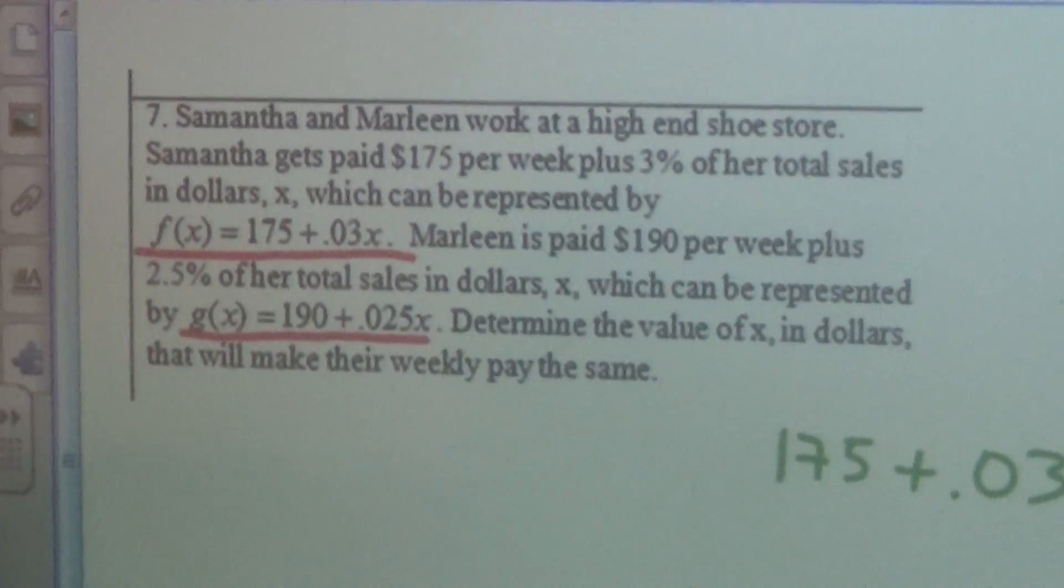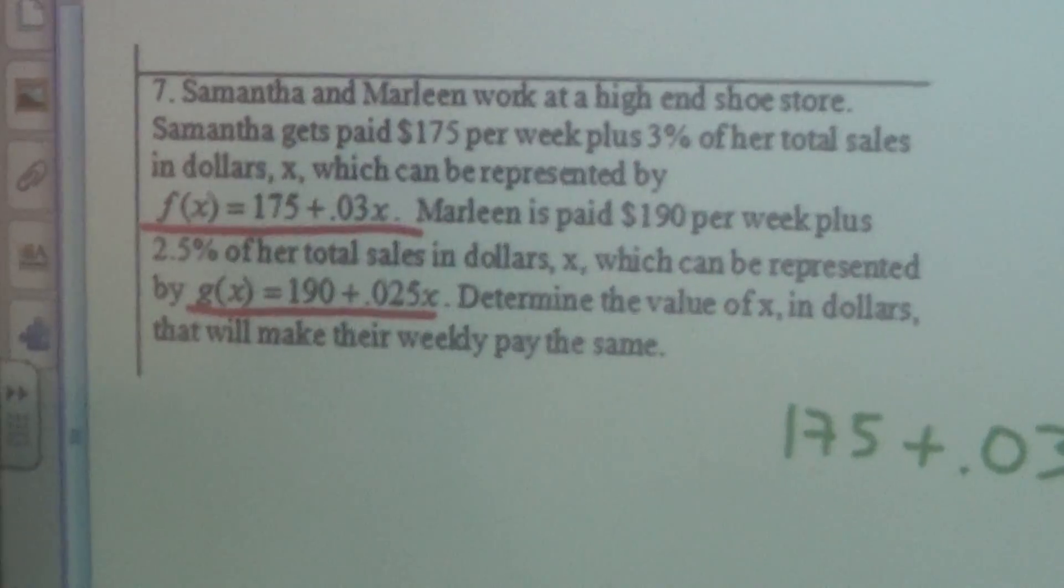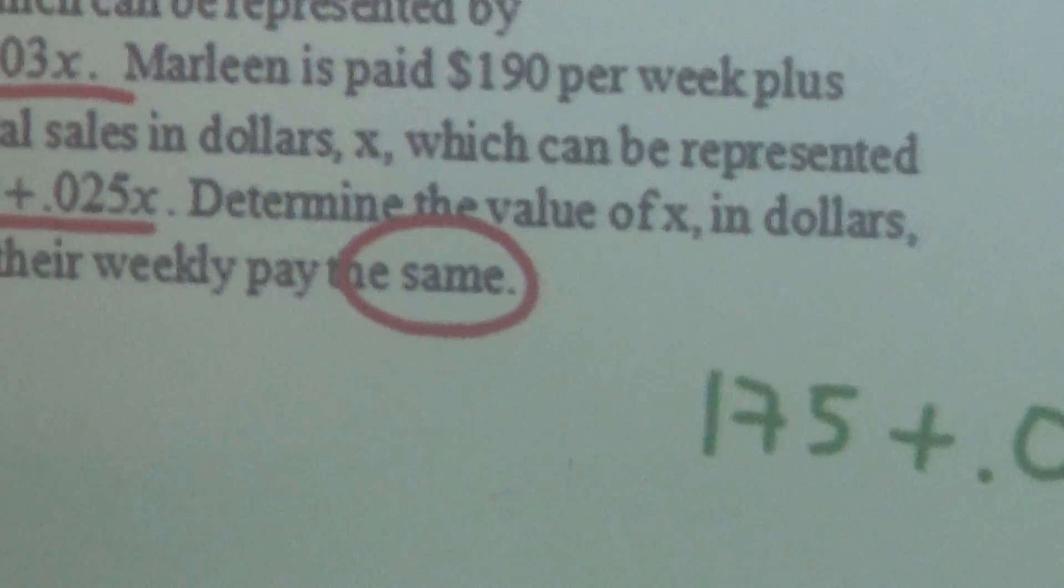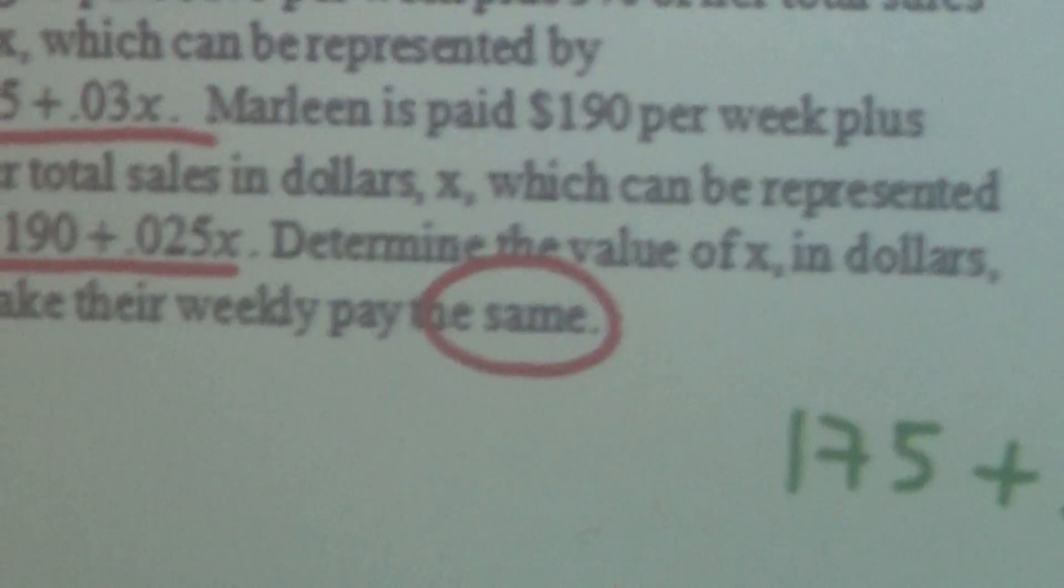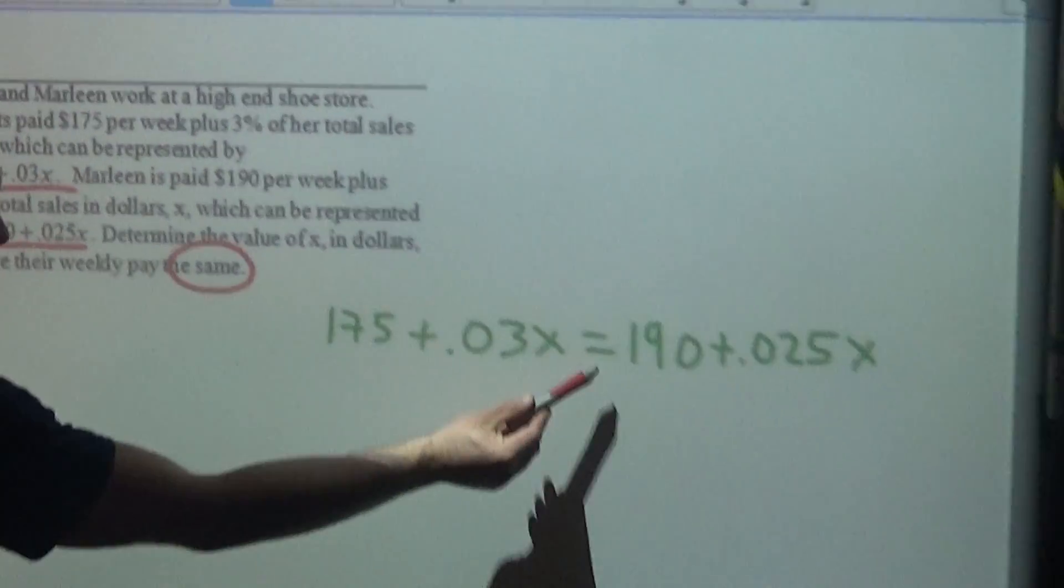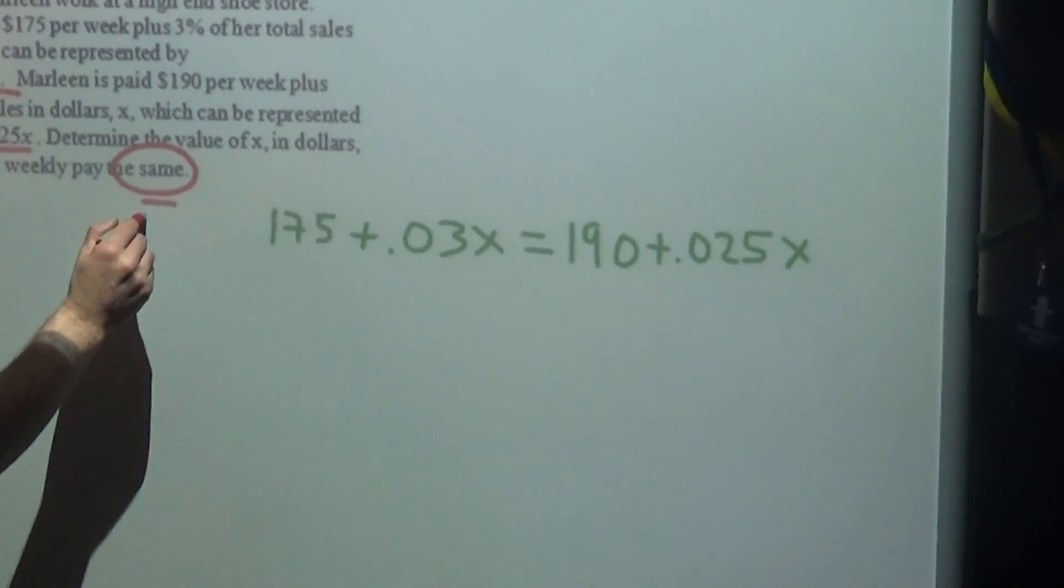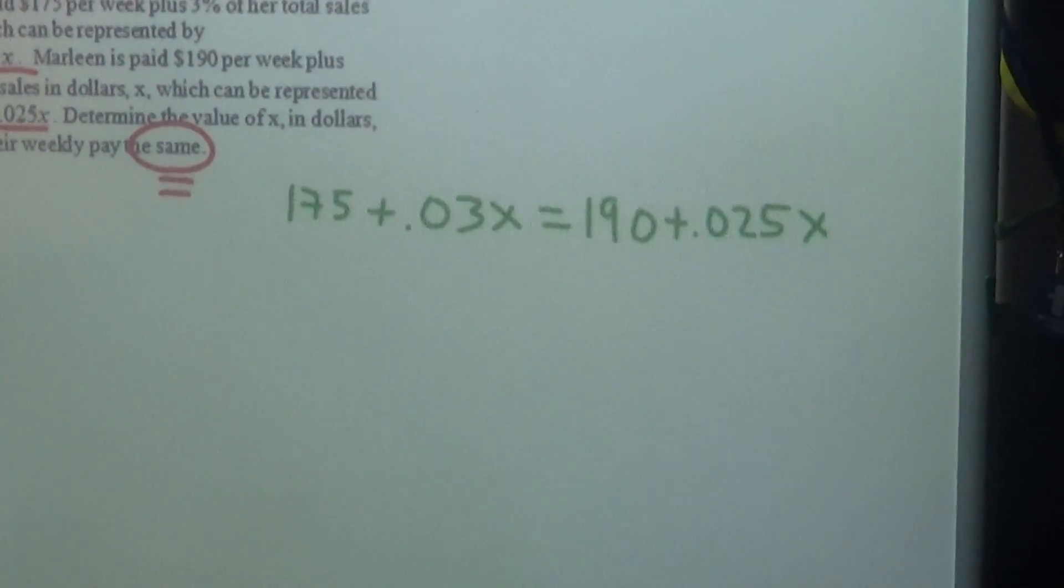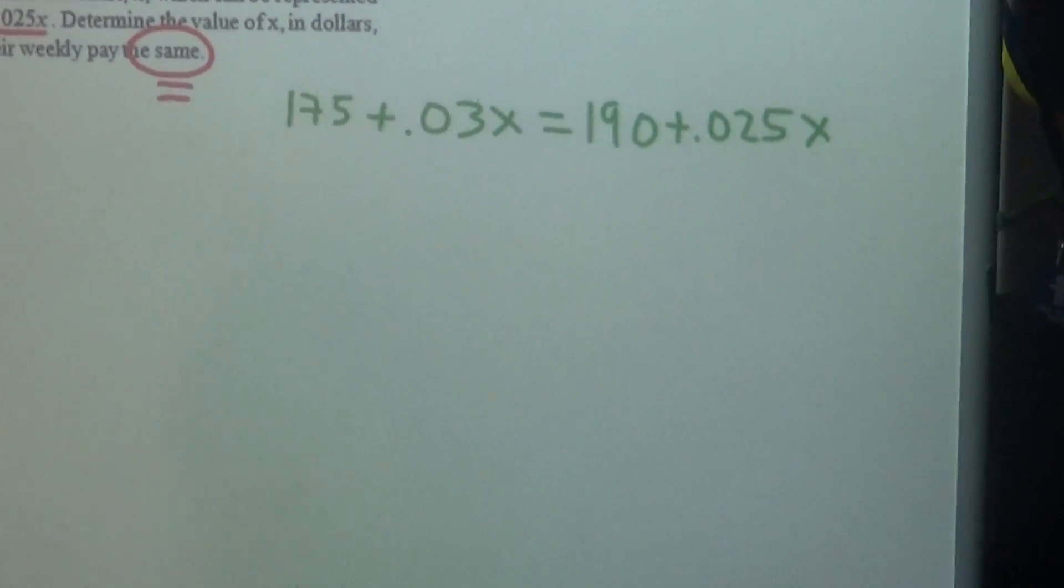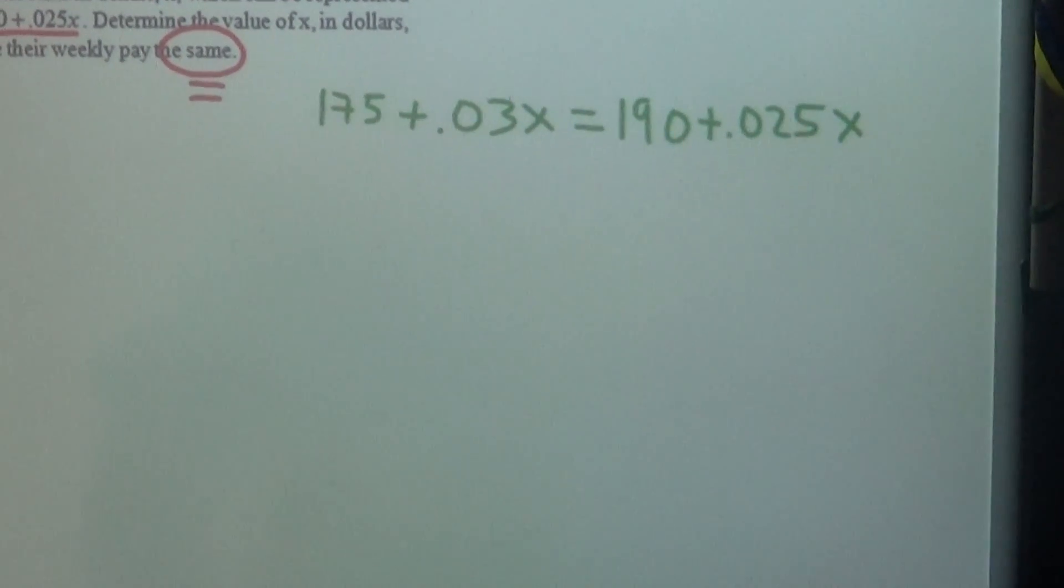It says determine the value of x in dollars that will make their weekly pay the same. Any time we're trying to find out where two equations are the same, we set them equal to each other, right? Same means equal. So I set my equations equal to each other, and from here we're just going to solve for x by picking on the little guy.